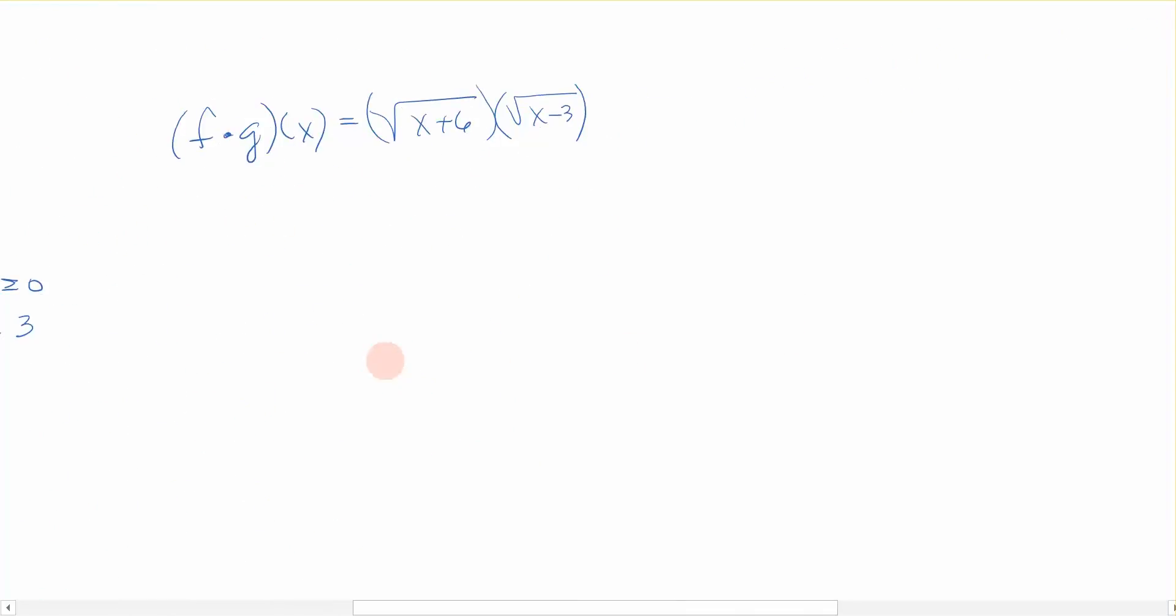When we were adding, we couldn't do anything with the two radicals. We couldn't make it any simpler. But when we multiply, we actually can. So I can rewrite this as the square root of x plus 6 times x minus 3, because my properties of radicals allow me to write these factors underneath the same radical sign, because they're both square roots.